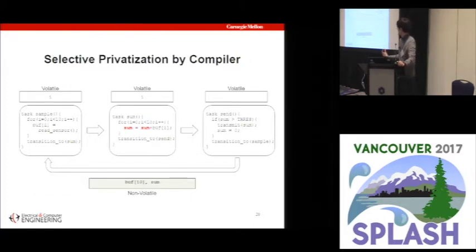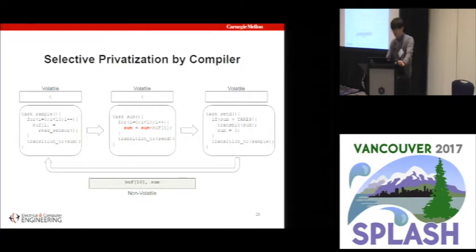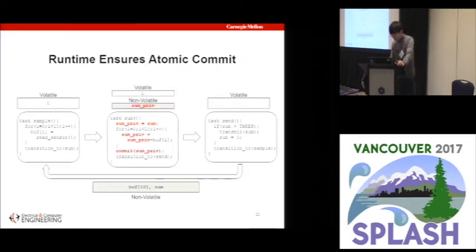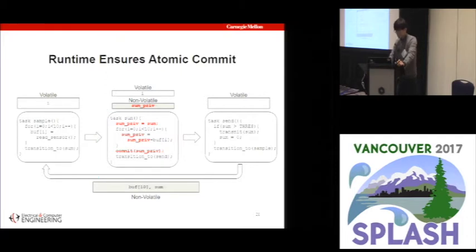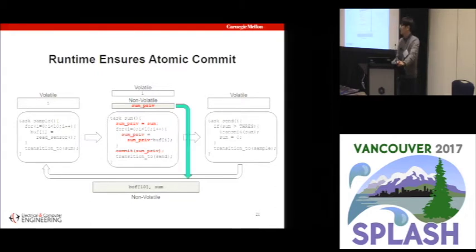However, now there's a problem: since sum is non-volatile, we have the same write-after-read dependency issue. This region of code is not idempotent. So we built a compiler that automatically detects this problematic behavior and inserts code statically to solve it. The compiler allocates a privatization buffer for the problematic variable, called sum_priv. At the beginning of the task, it copies the value of sum to its privatization buffer, and within the task, all operations manipulate the privatized copy. When the task ends successfully, a two-phase commit mechanism safely copies the result back to the original location. On power failure, the privatized copy is simply discarded and the task restarts.